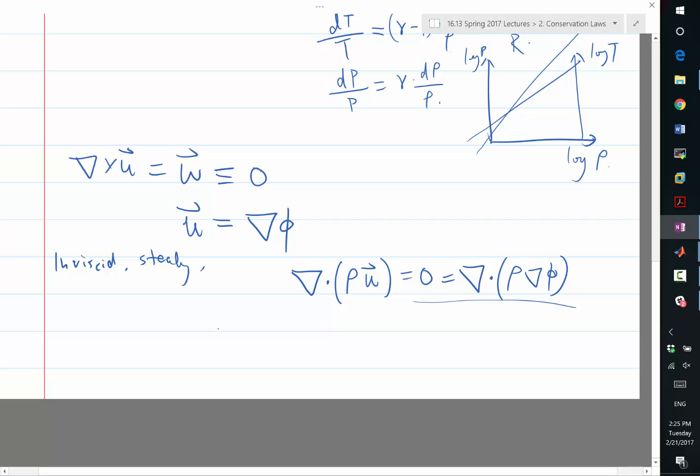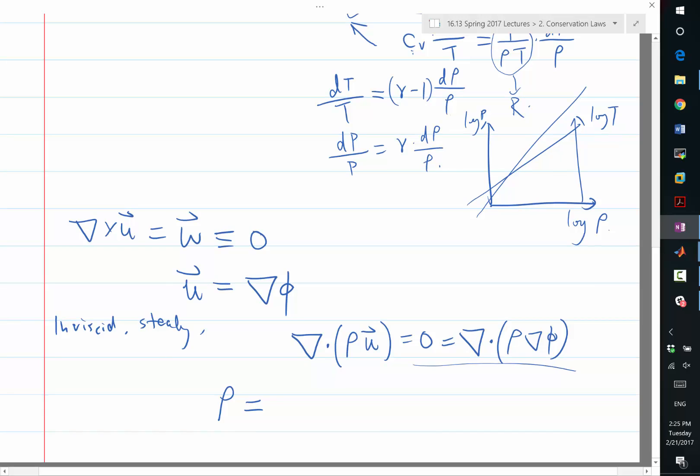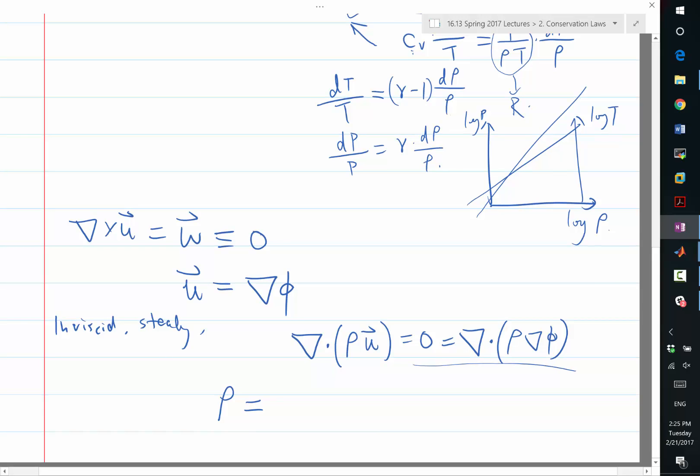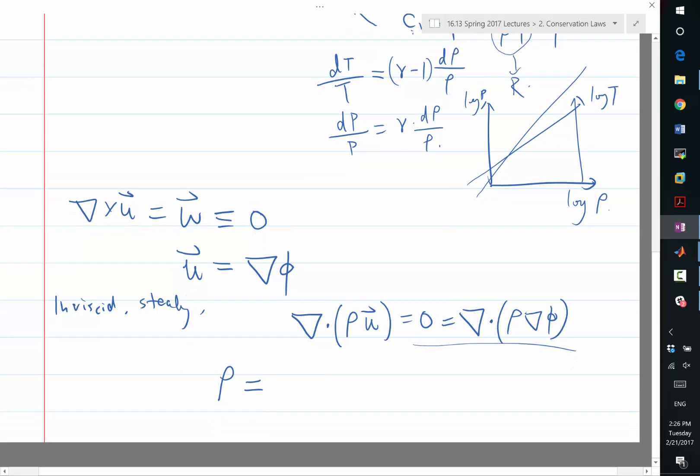Zero equal to some kind of a Laplacian. And the rho is actually a function of the velocity, and that's also by isotropic relationships. So we have rho equals rho infinity times a function of the Mach number involving gamma minus 1 divided by 2 times the Mach number squared.